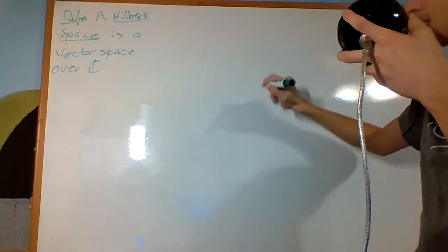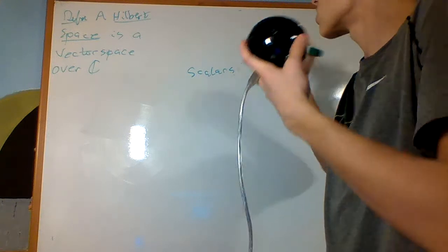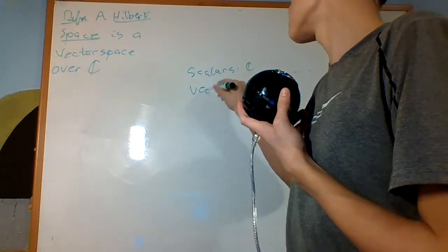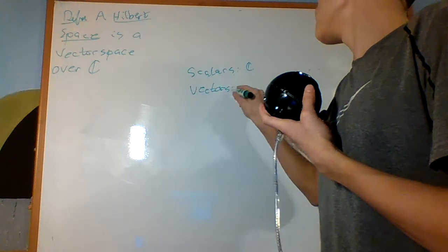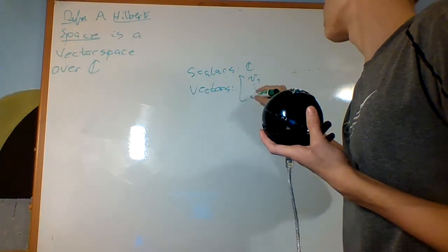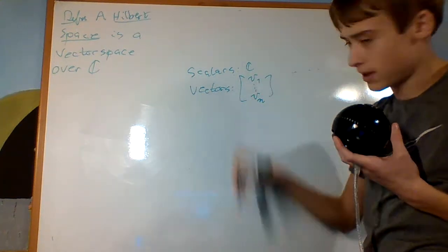So that means that scalars are complex numbers, and then the vectors are going to be like column matrices of complex numbers.